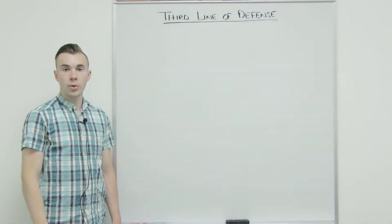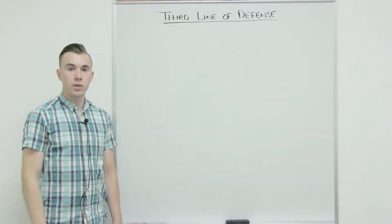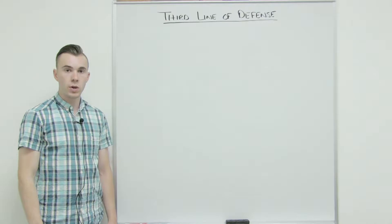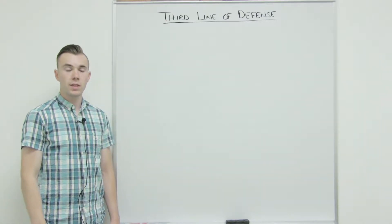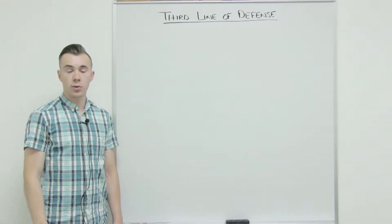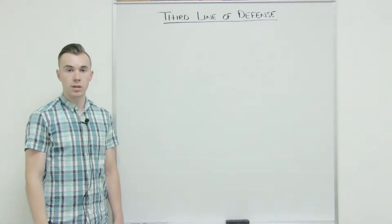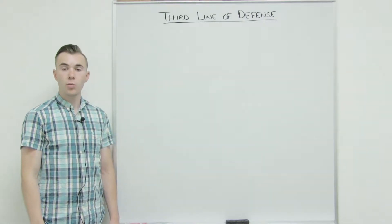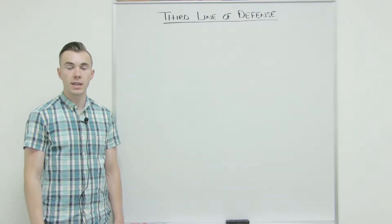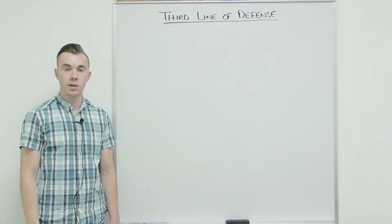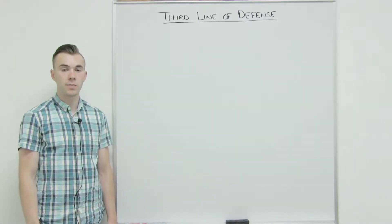This is the second video in the third line of defense video series. In this portion, we are going to be discussing the humoral response. There are two different aspects of the third line of defense: the humoral response and the cell-mediated response. The humoral response involves B cells and is sometimes referred to as the antibody response, as B cells are the type of cells that create antibodies.